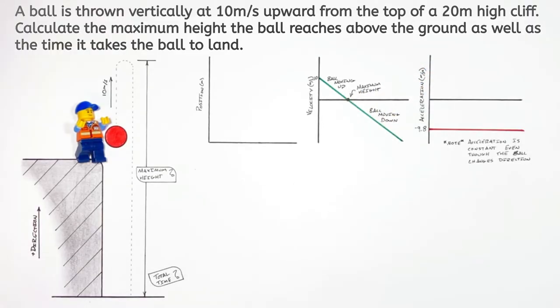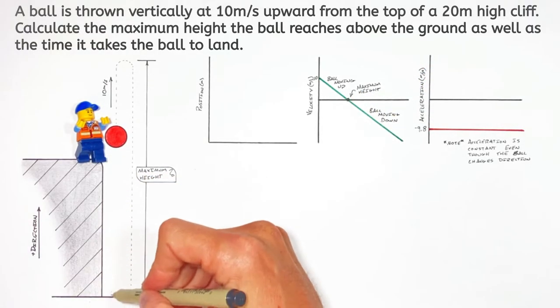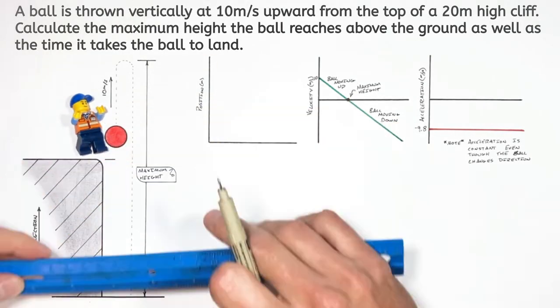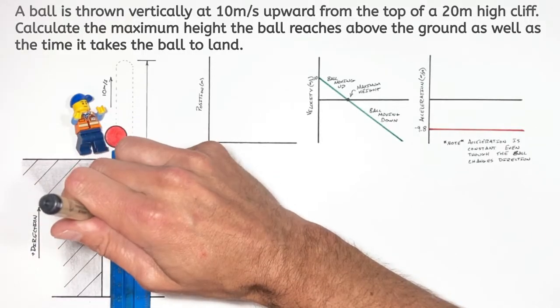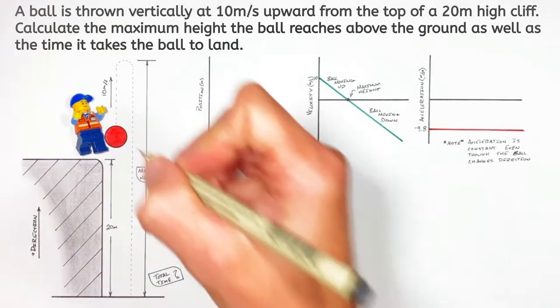Now moving on to position, we know the cliff has a height of 20 meters. So initially the ball is at a height of 20 meters. Now I know some of you want to worry about the height of the person. We're not going to complicate this to that degree. Just say the person is terribly short.